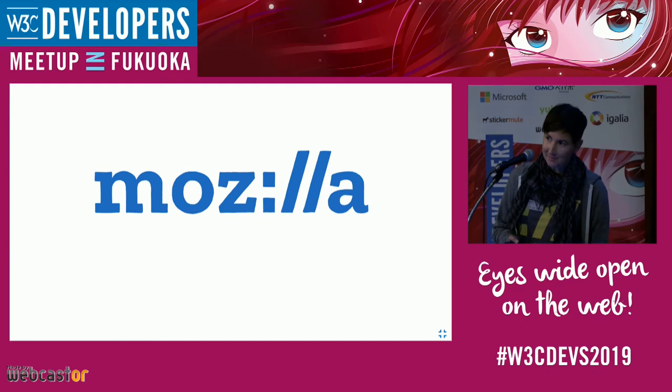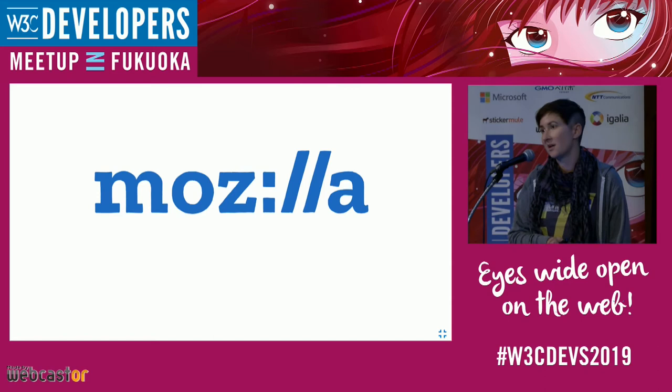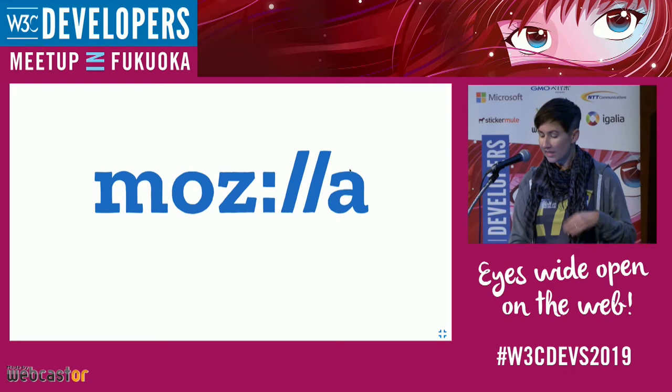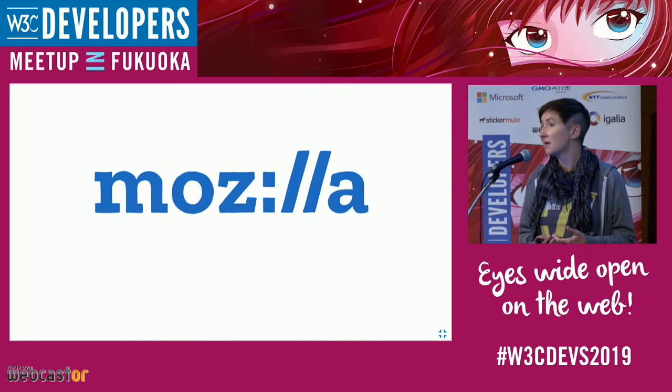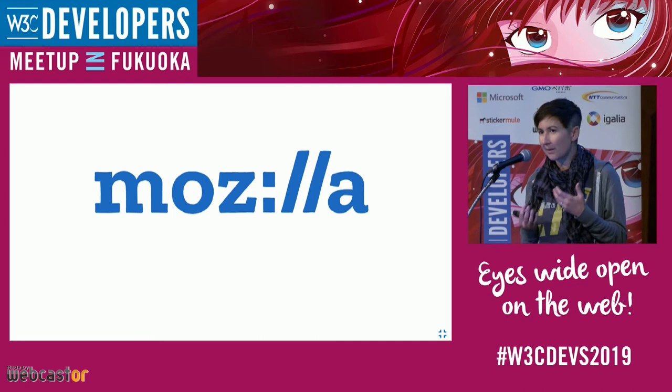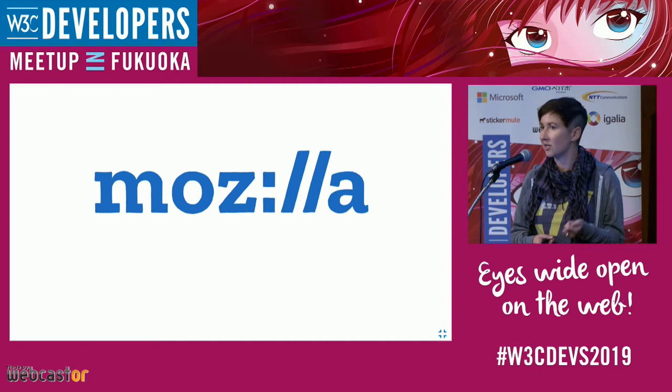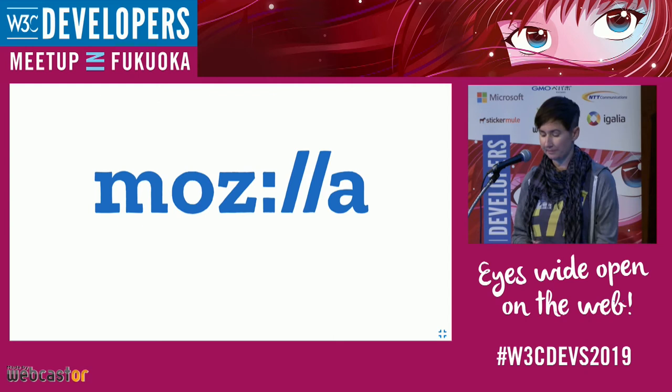If you aren't familiar with WebAssembly, it started as a way to run programming languages besides JavaScript on the web — languages like C, C++, and Rust. With this we saw how we could bring some of the nice aspects of native development, like predictable performance, to the web. But lately our team has been looking at how we can use WebAssembly to bring some of the nice aspects of web development — things like portability and the security model — outside of the browser, going in the other direction.